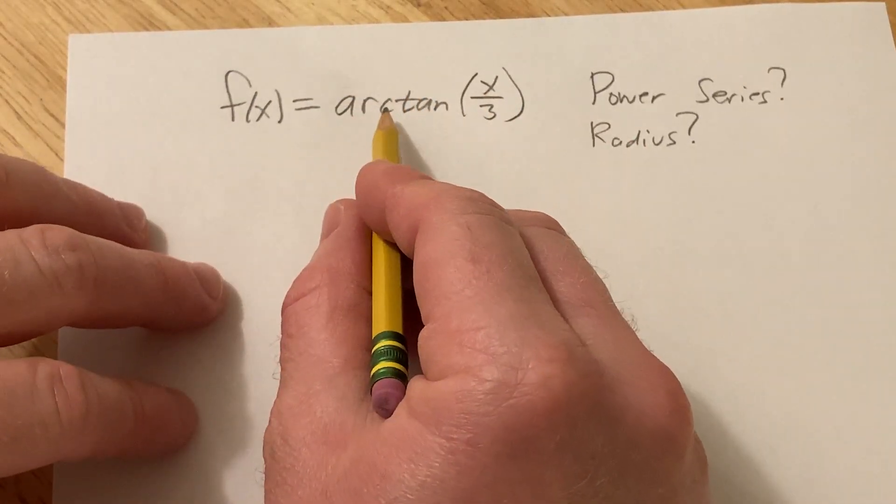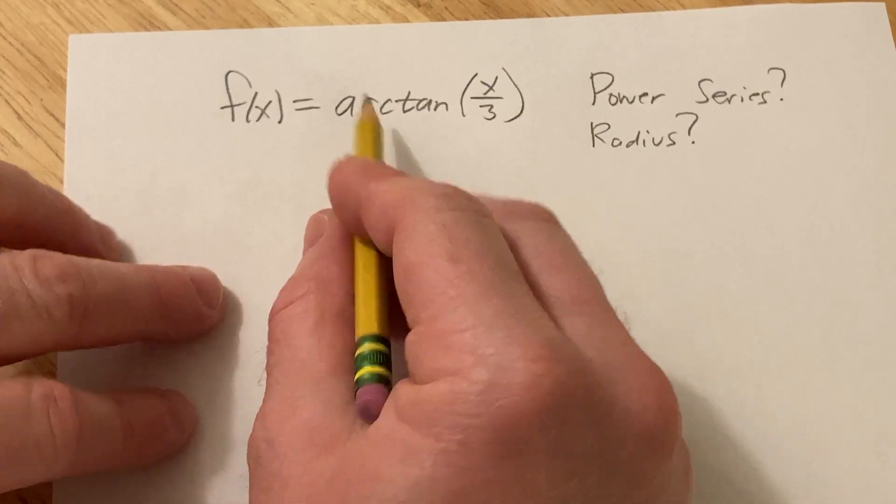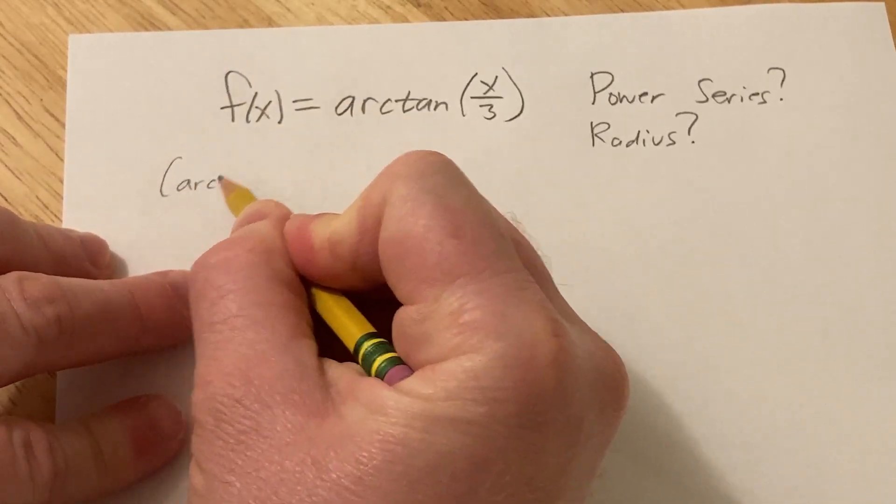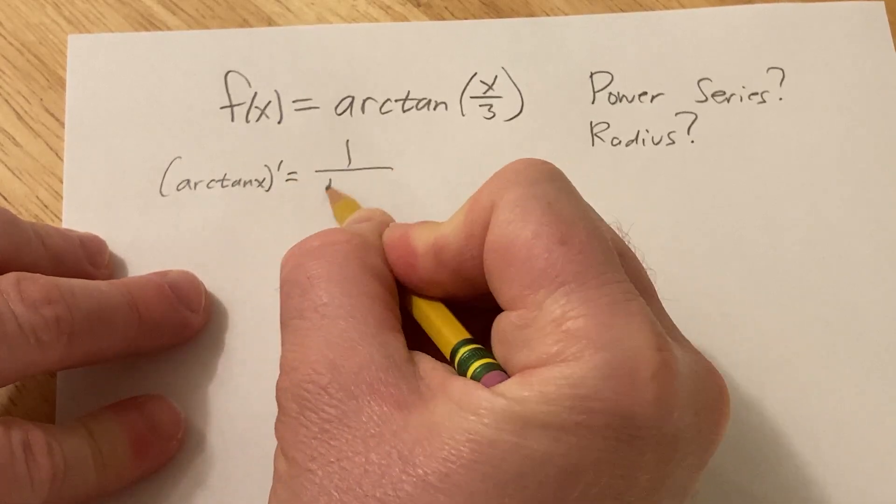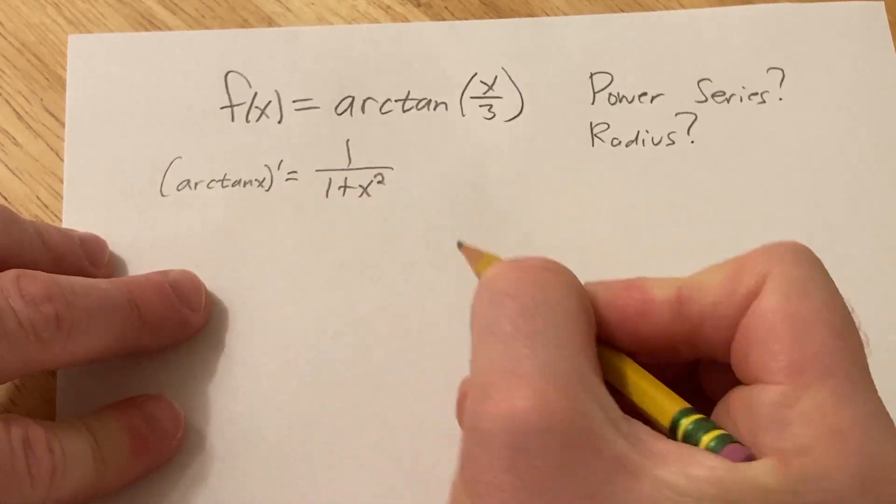So the first thing you want to think about is the derivative of arctangent. Recall that the derivative of arctangent is 1 over 1 plus x squared. That's the derivative of arctan.